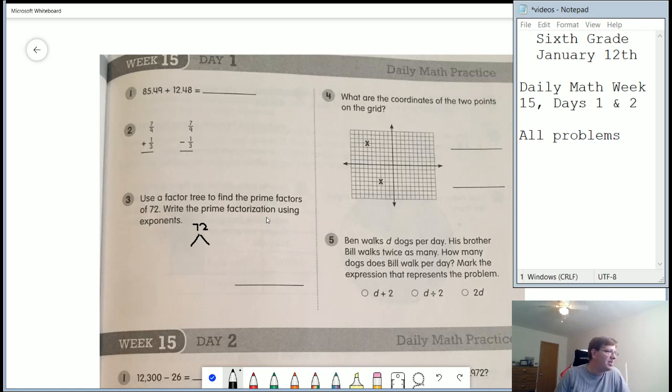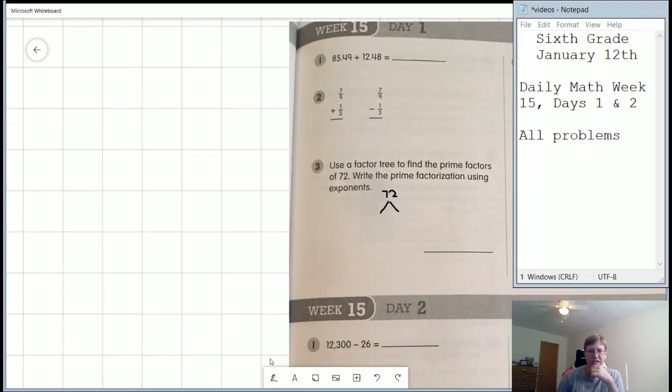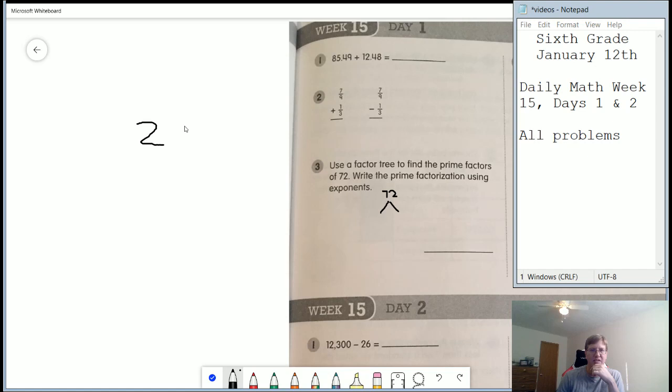And then it says, write the prime factorization using exponents. So that is an extra wrinkle. So once we are done, let's say for instance that I started with 25. So I am going to do this out to the side. I'm going to move this page over. And let's say I wanted to do 25. So 25 would give us five times five. Both of those are prime numbers to write the prime factorization for that. I would write it as five squared.